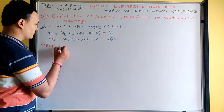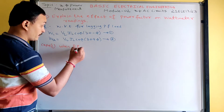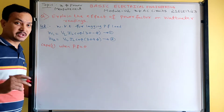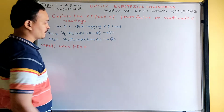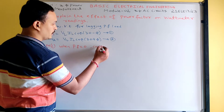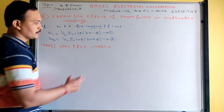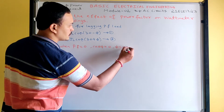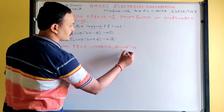Case 1: when power factor is zero. What will the wattmeter readings be? Power factor means cos φ, so cos φ = 0. From this, φ = cos⁻¹(0), which gives φ = 90 degrees.